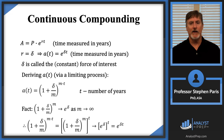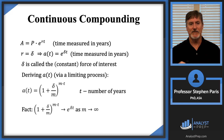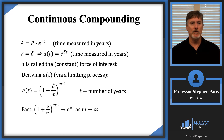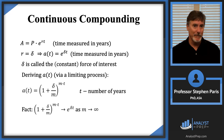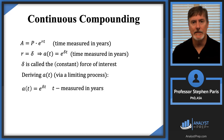In the expression defining A of T, I have an exponent of M times T. I think of that as 1 plus delta over M raised to the M, then that raised to the T. As M goes to infinity, what's in brackets converges to e to the delta, so the whole thing converges to e to the delta times T. As we compound more and more frequently, the accumulation function in the limit is e to the delta times T, where T is measured in years.